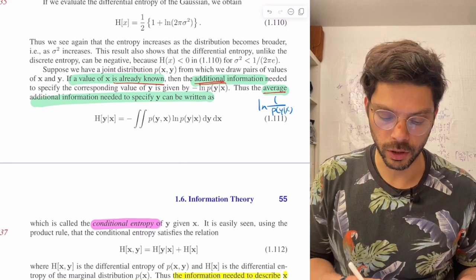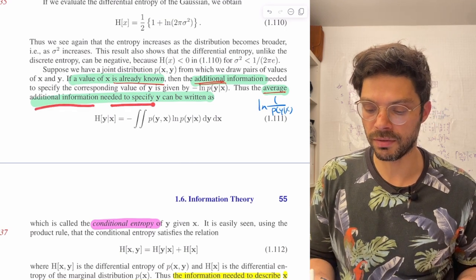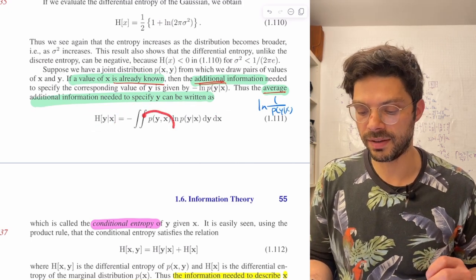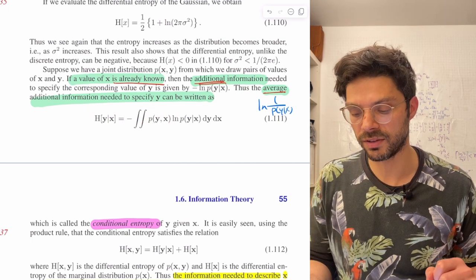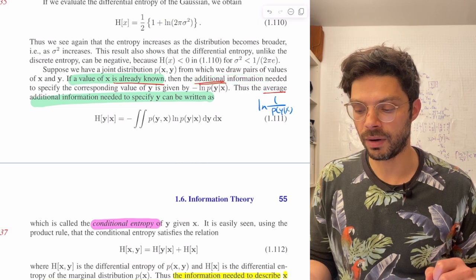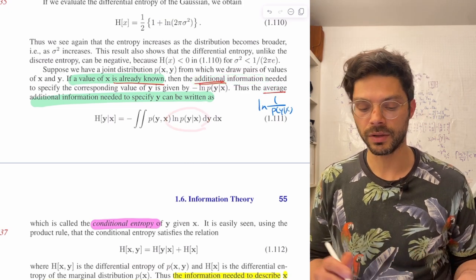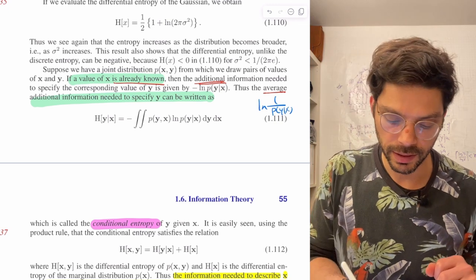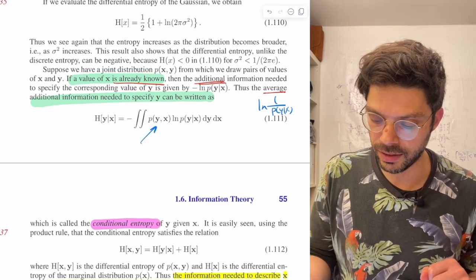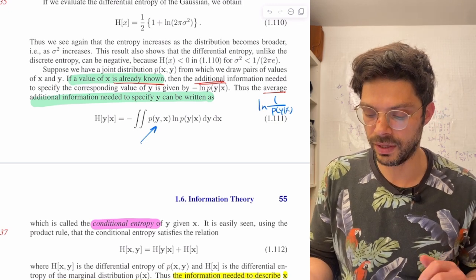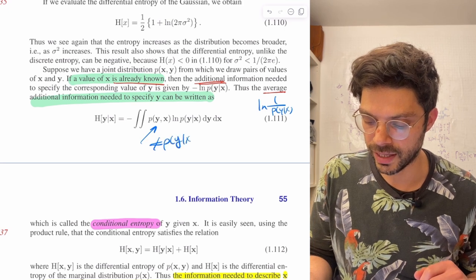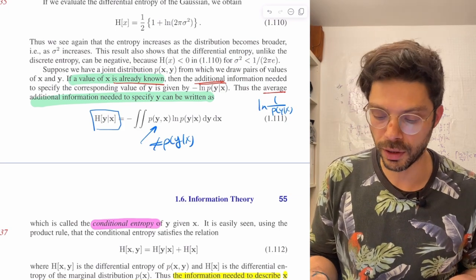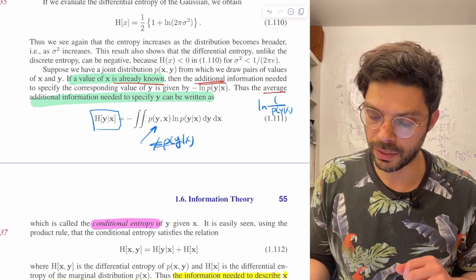And then the average additional information needed to specify y can be written as this conditional entropy, which is the expectation over the joint distribution of x and y of this surprise, of ln of p of y given x. Now, one thing that's really important, it took me a while to remember, is that this is integrating over the joint distribution.